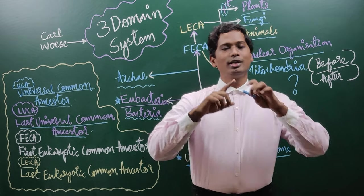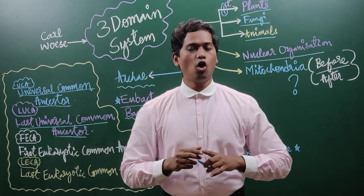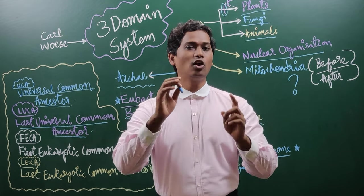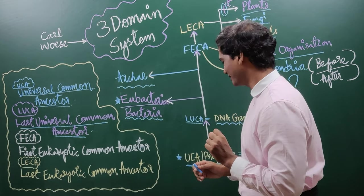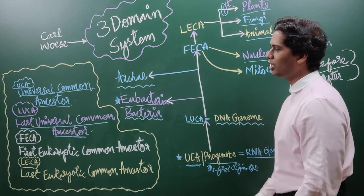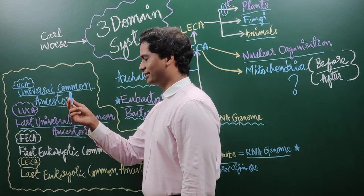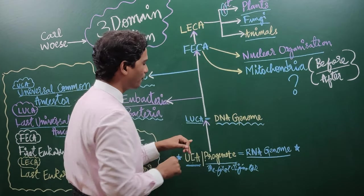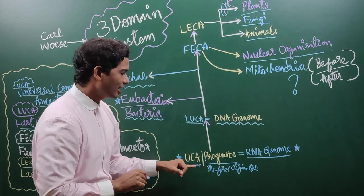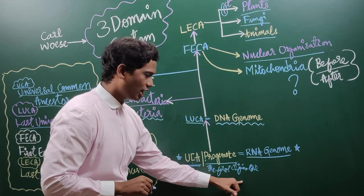What he told, all the organisms came from the common ancestor. That common ancestor, he called it as LUCA. LUCA means universal common ancestor. This LUCA is also called as progenote, progenote means the first originator of life.